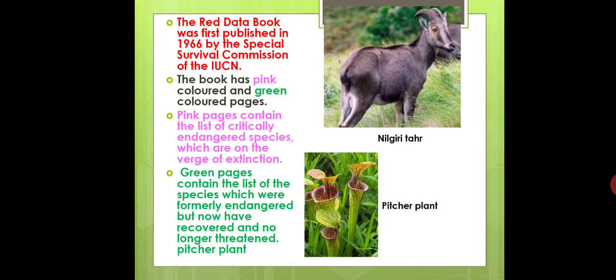Pink pages contain the list of critically endangered species — those on the verge of extinction. Green pages contain the list of species which were formerly endangered but have now recovered. They are no longer at risk, so such organisms are listed in the green colored pages.